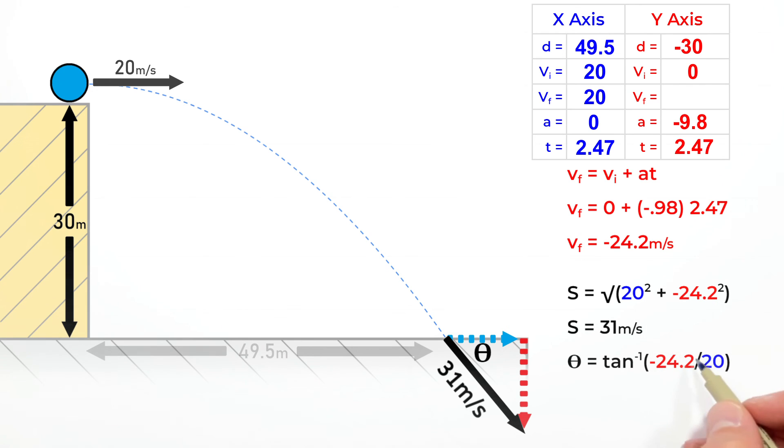We can set the angle equal to the inverse tangent of 24.2 over 20. Whether or not you include a negative on the 24 is up to you, but when you solve for the result, we find the angle is 50 degrees below the positive x-axis.